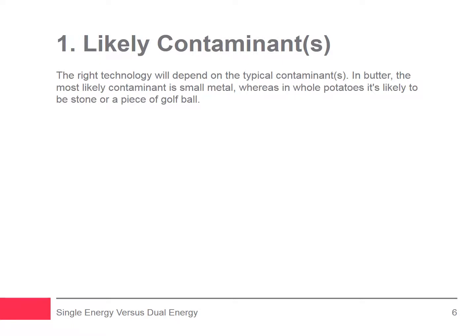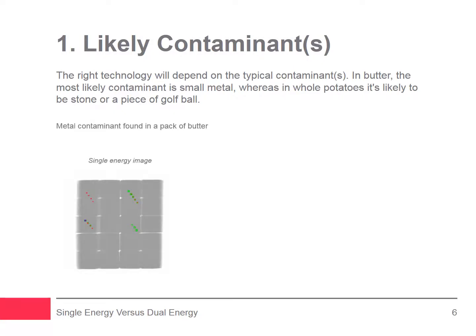Single energy technology is very effective at detecting contaminants that exhibit an x-ray absorption spike relative to the surrounding product's absorption. Such systems give exceptional levels of detection for stainless steel, ferrous, and non-ferrous metals. They are also good at detecting glass, calcified bone, mineral stone, and high-density plastics and rubber in homogenous products such as butter or yogurt. For example, it is easy to see the metal contaminant in the single energy image of butter. In contrast, dual energy technology is better at detecting objects that show a very small x-ray absorption variation, such as dense contaminants in dense products — for example, stone in mixed nuts.